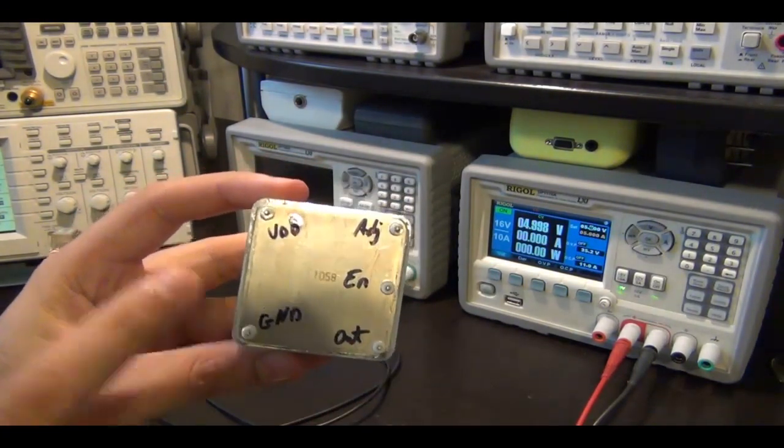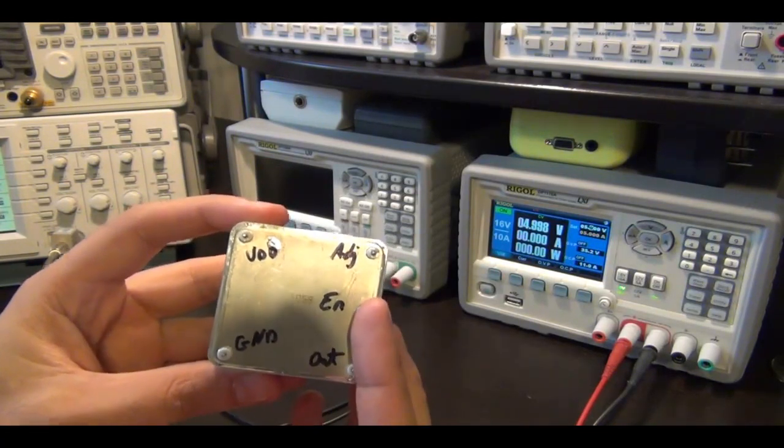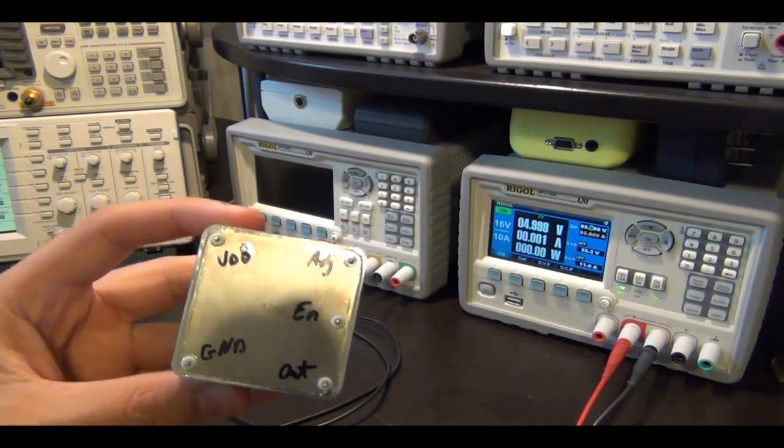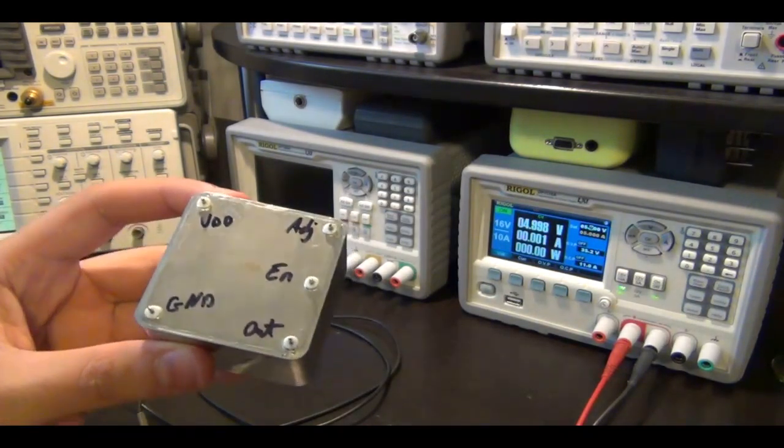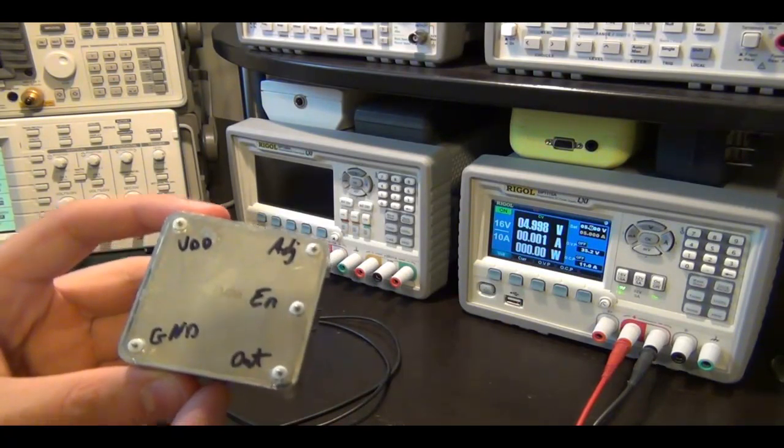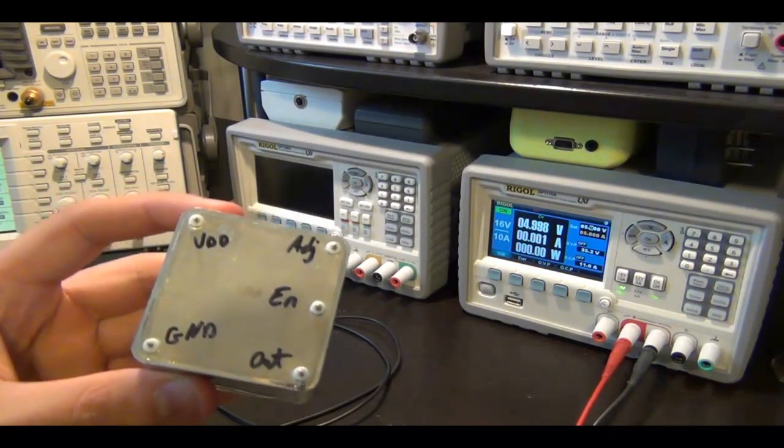So it has an output, the ground, the VDD. It also has an enable pin so you can disable and enable the output of this while it's powered up. That can be very important in some systems. And it also has an adjust pin. You can adjust the frequency of this by maybe about 10 Hz.